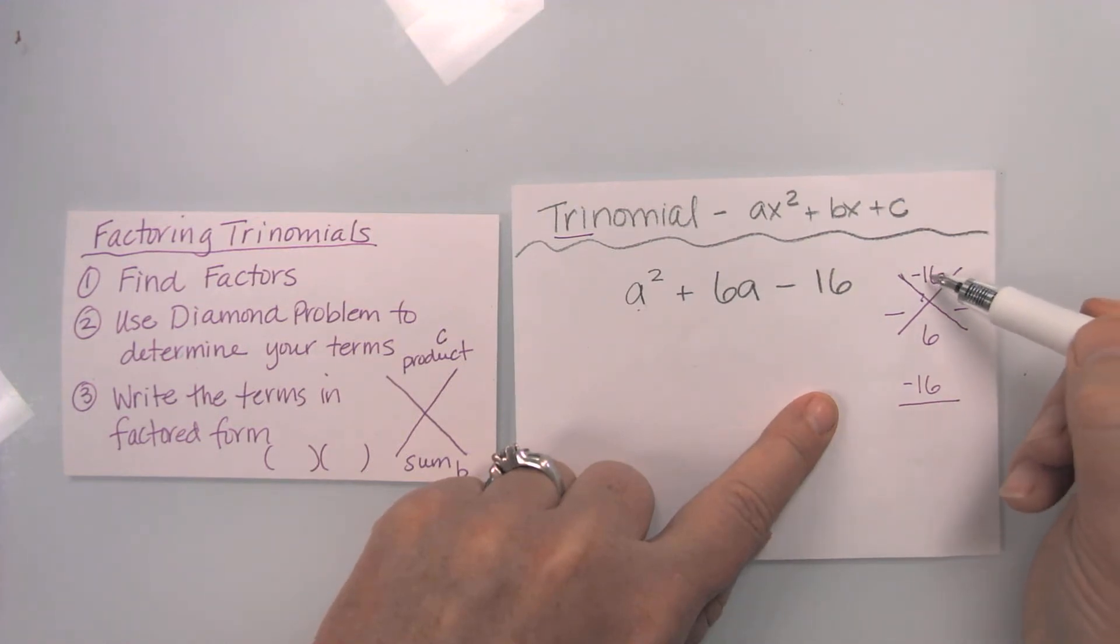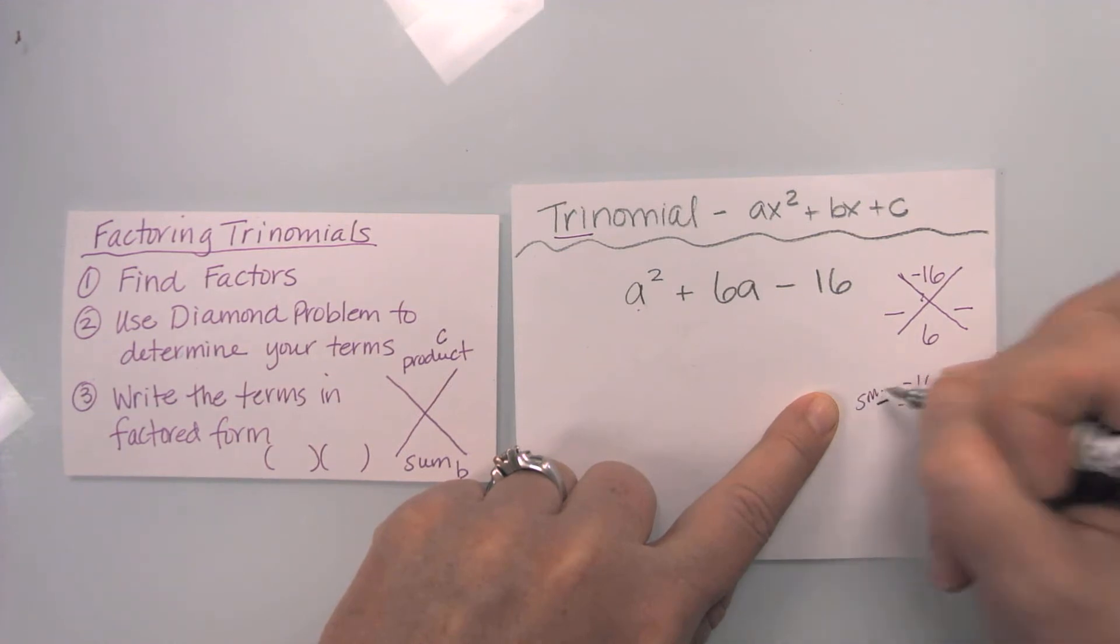Now I notice that when I add my terms together, they become positive, which tells me that my largest number has to be positive. So my smallest number will be negative, my largest number will be positive.